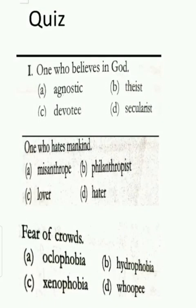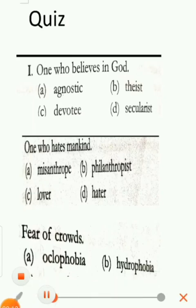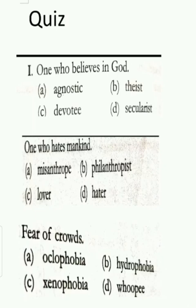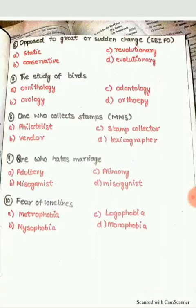Here are some practice questions you can attempt in the comments below. First: One who believes in God — A. Agnostic, B. Theist, C. Devotee, or D. Secularist. Second: One who hates mankind — A. Misanthrop, B. Philanthropist, C. Lover, or D. Hater. Third: Fear of crowd is known as — A. Ochlophobia, B. Hydrophobia, C. Xenophobia, or D. Woofie. Thank you so much, guys. If you like this video, please like, share, and subscribe to our channel.